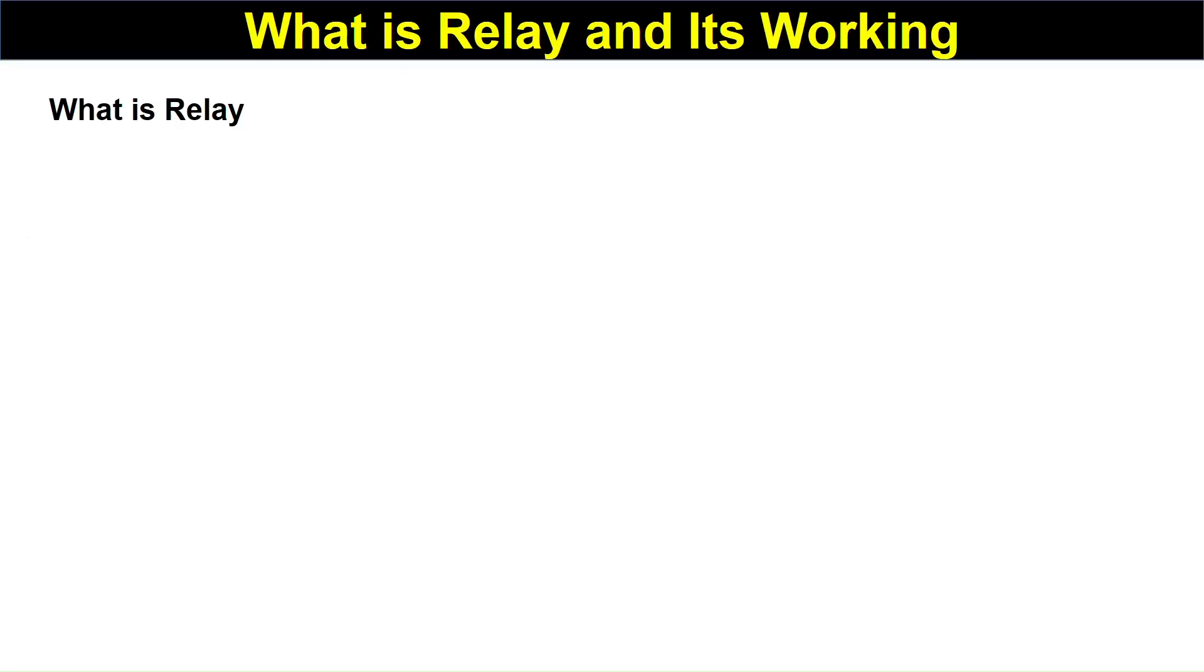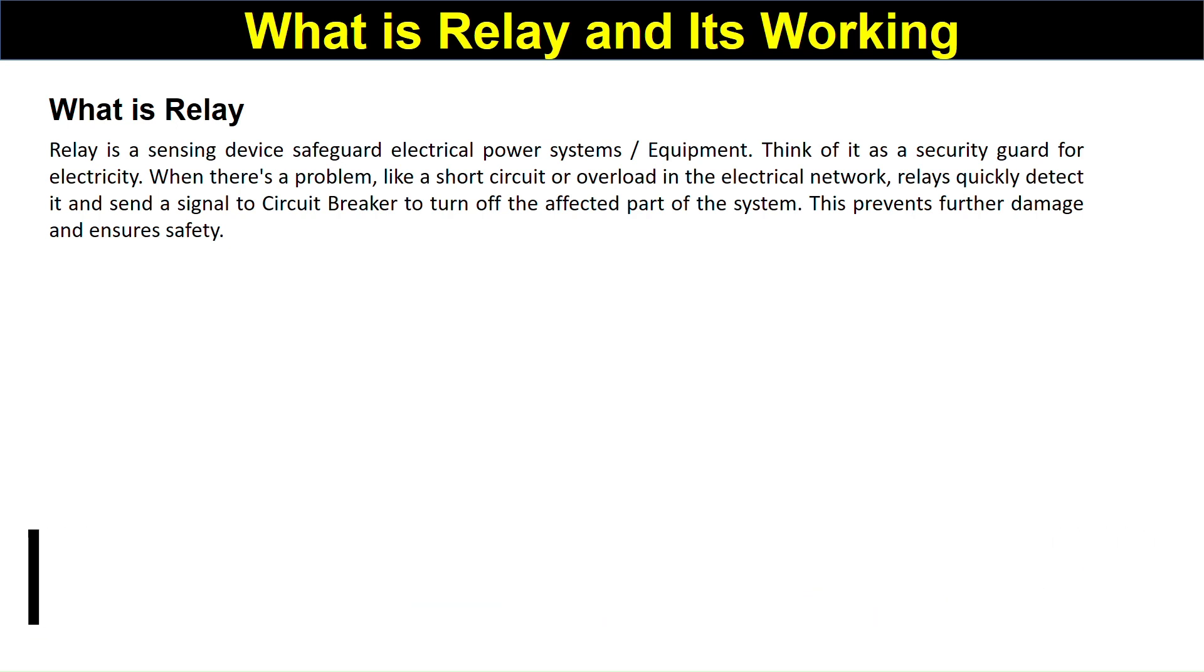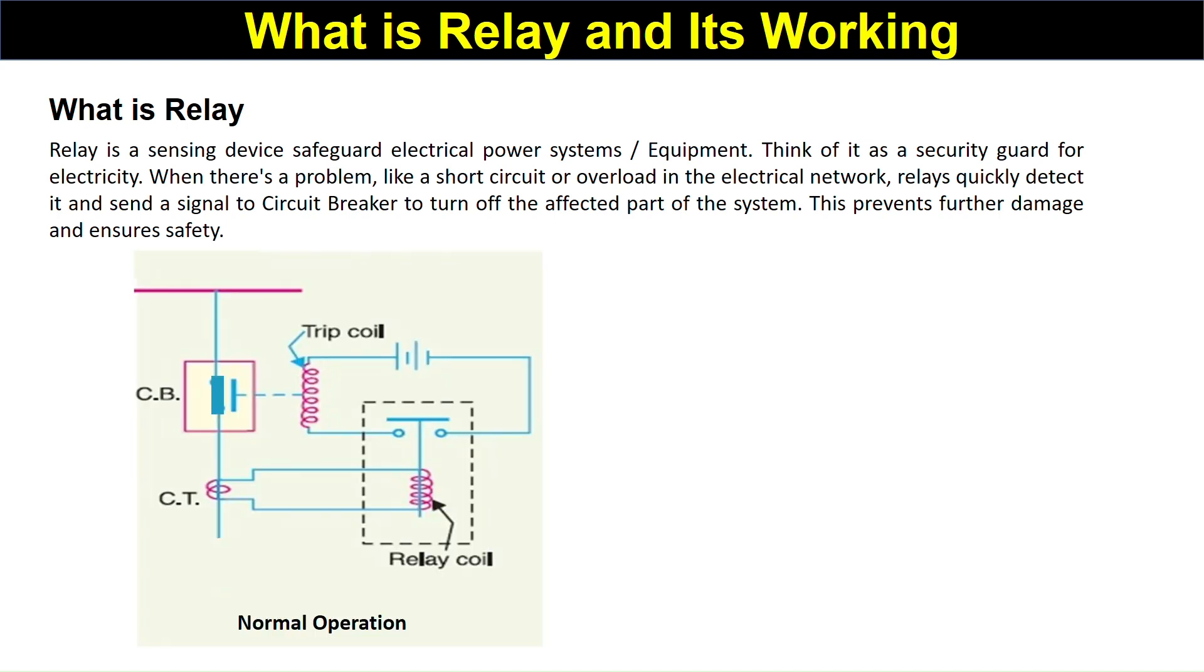What is relay? First of all we should know what is relay. Relay is a sensing device that safeguards electrical power systems or equipment. Think of it like a security guard for electricity. When there is a problem like a short circuit or overload in the electrical network, relay quickly detects it and sends a signal to the circuit breaker to turn off the affected part of the system. This prevents further damage and ensures safety.